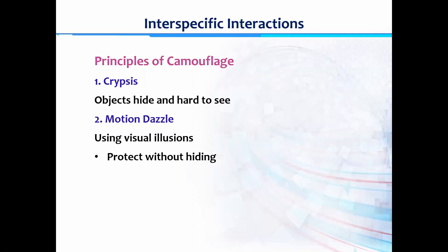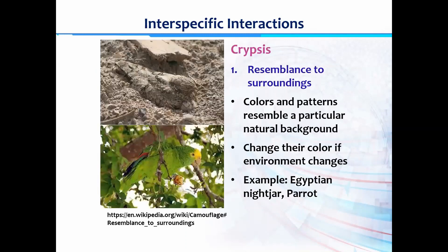Different patterns and different adaptations hide the animal and make it hard to see by predators. In motion dazzle, even when the animal is moving, it is still difficult for predators to identify the prey. We will study crypsis first, then motion dazzle. In crypsis there are different techniques adopted by different animals.